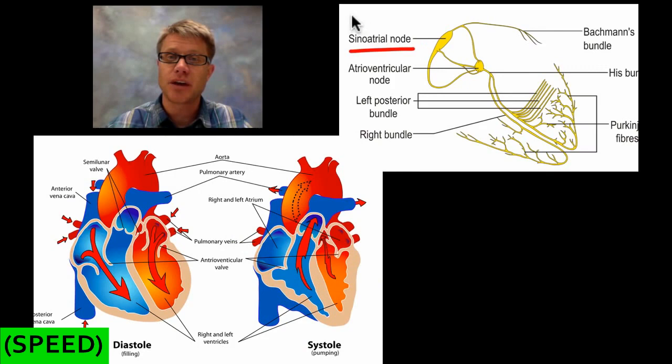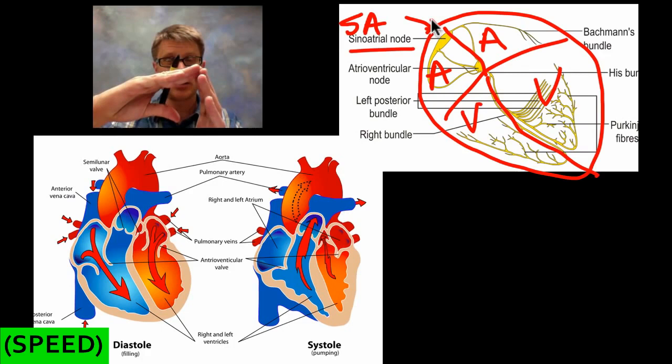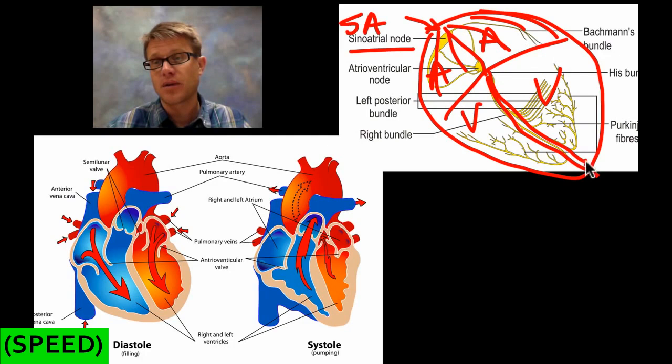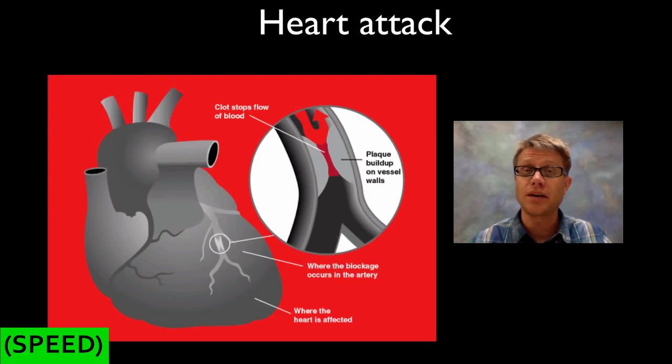Timing is important, and it's controlled by the sinoatrial node — the SA node — where the heart contraction starts. The electrical signal begins at the top of the heart, squeezes the atrium shut, travels all the way down to the apex, then flows back up through the ventricle. This moves blood from the atrium into the ventricle, and then out to either the pulmonary artery or the aorta and the rest of the body.